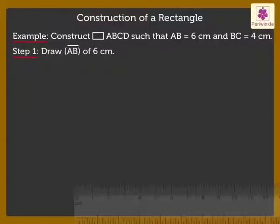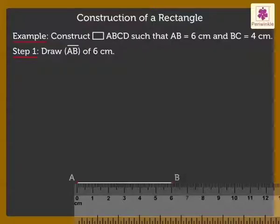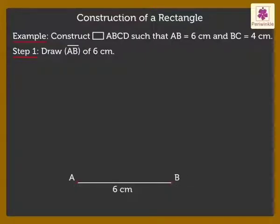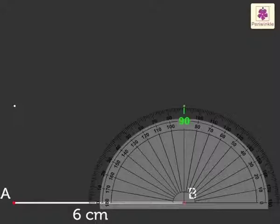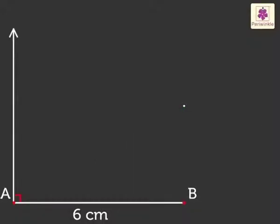Step 1: Draw line segment AB of 6 cm. Step 2: Construct 90-degree angles at A and B.